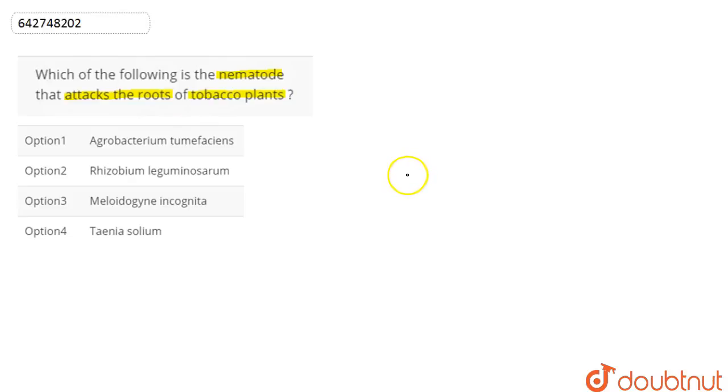The options are Agrobacterium tumefaciens, Rhizobium leguminosarum, Meloidogyne incognita and Tania solium.